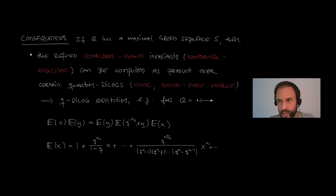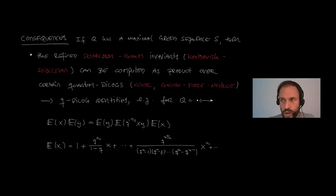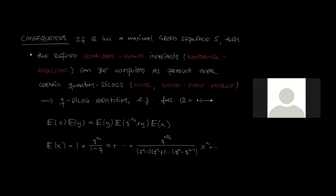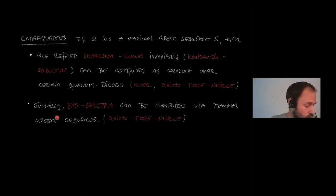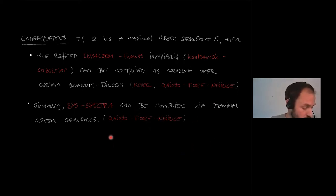The properties are inherited by reddening sequences and not just maximal green sequences, but maximal green sequences are in some situations more canonical, which makes them easier to find. For physicists, the BPS spectrum can be computed with maximal green sequences — that is the viewpoint of Gaiotto, Moore, and Neitzke.